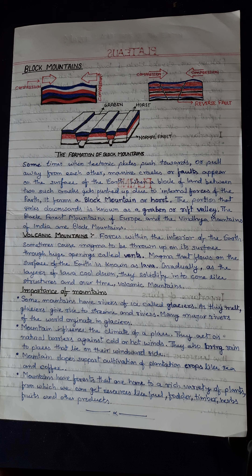The Black Forest mountain of Europe and the Vindhya mountain of India are block mountains. Volcanic mountains: forces within the interior of the earth sometimes cause magma to be thrown up onto the surface through a huge opening called a vent. Magma that flows on the surface of the earth is known as lava. Gradually, as the layers of lava cool down, they solidify into cone-like structures and over time volcanic mountains form.